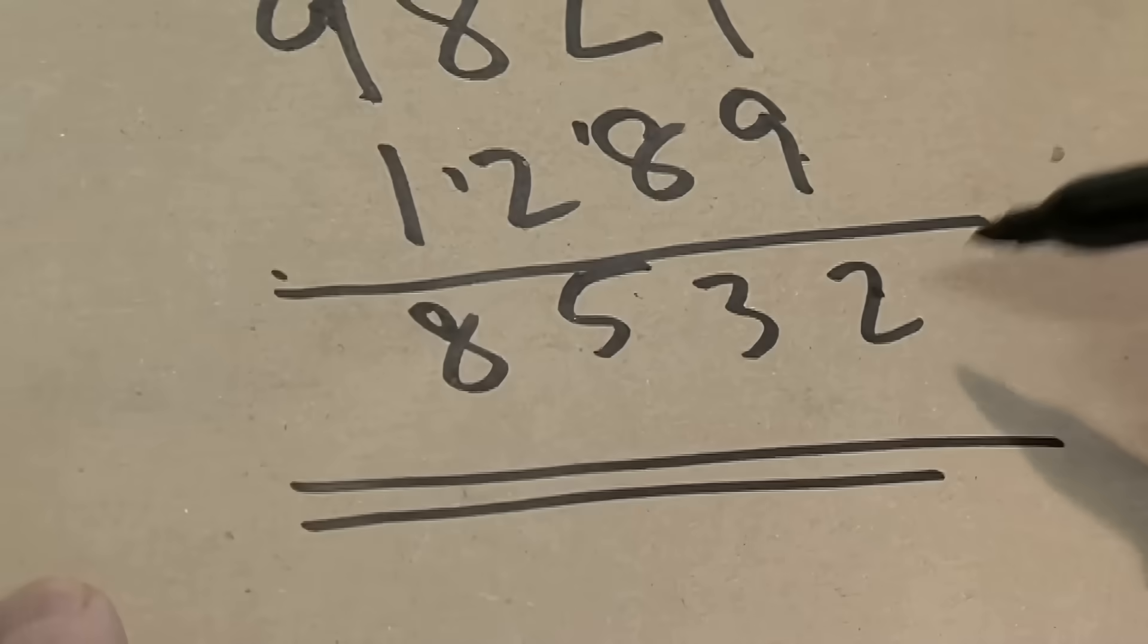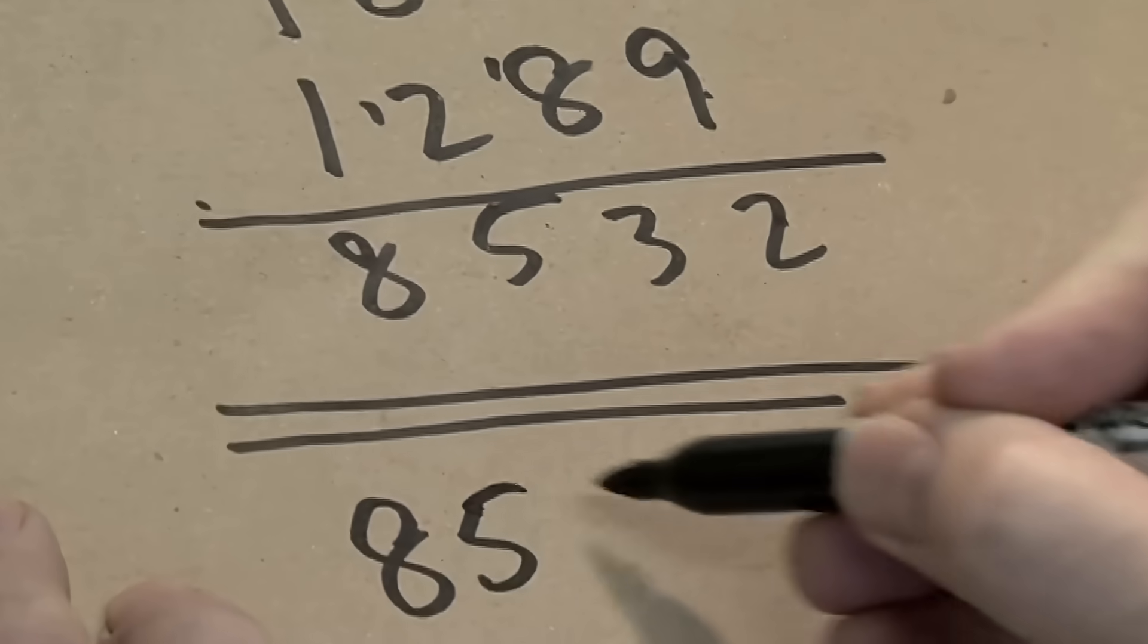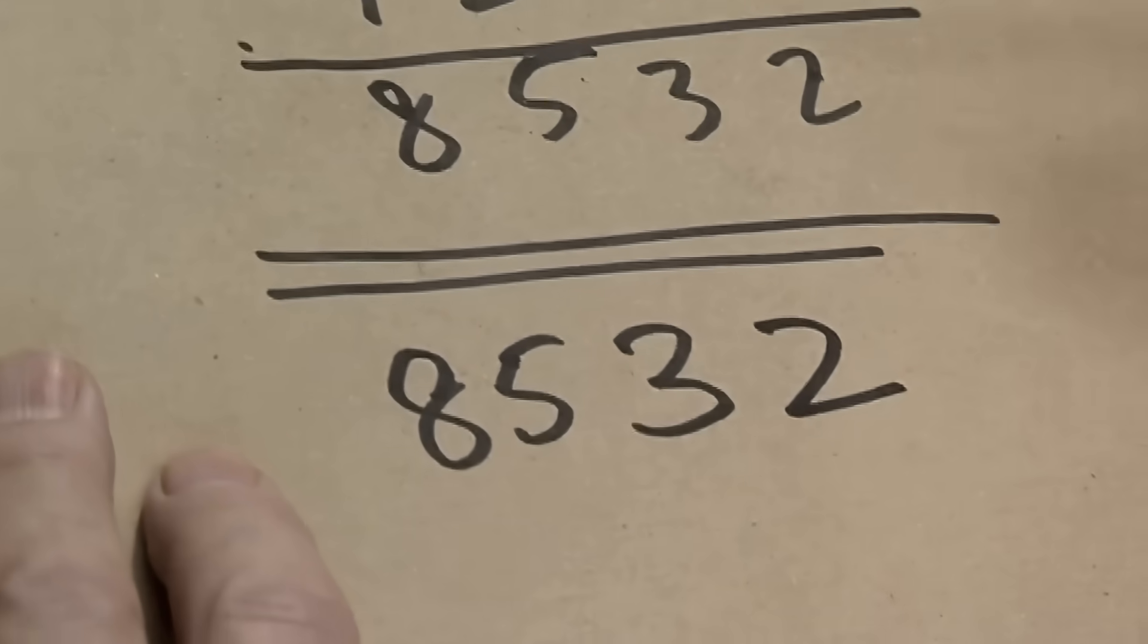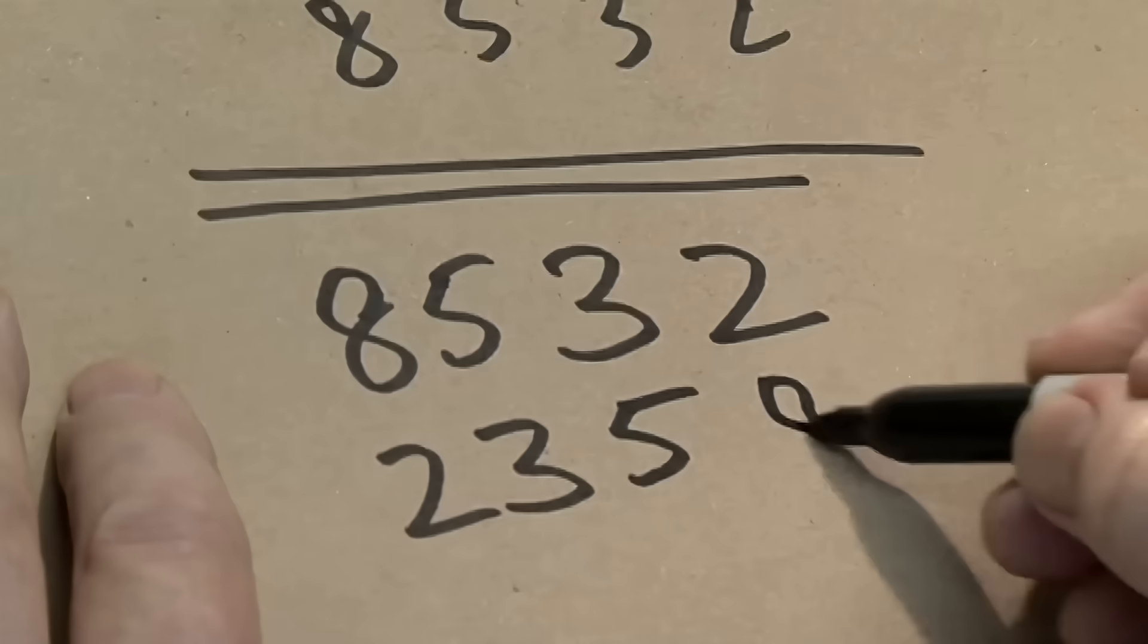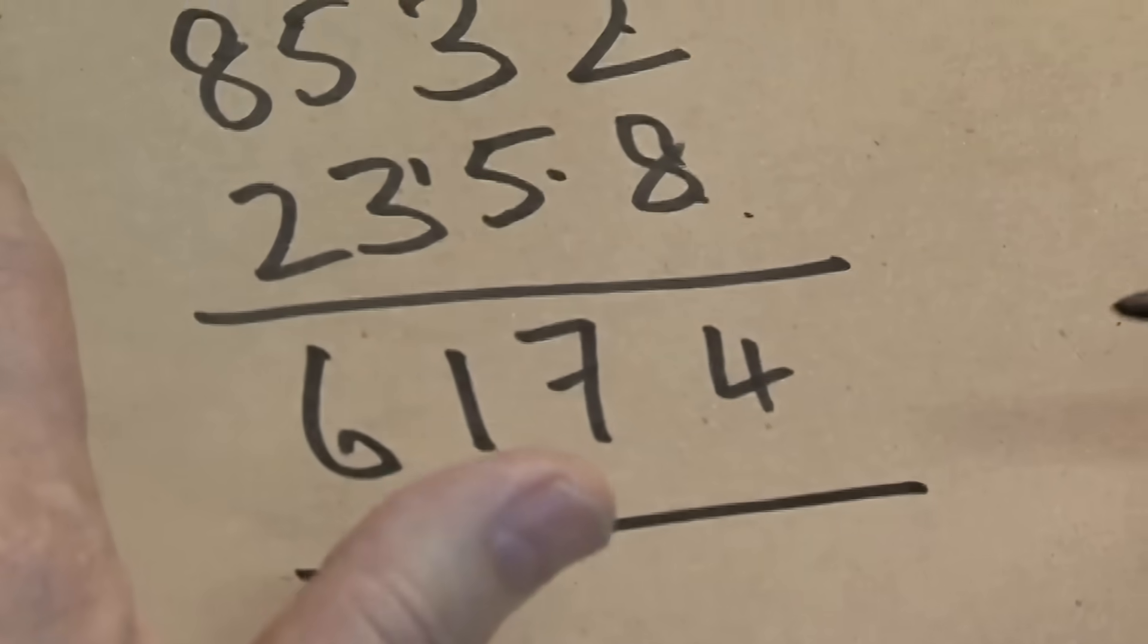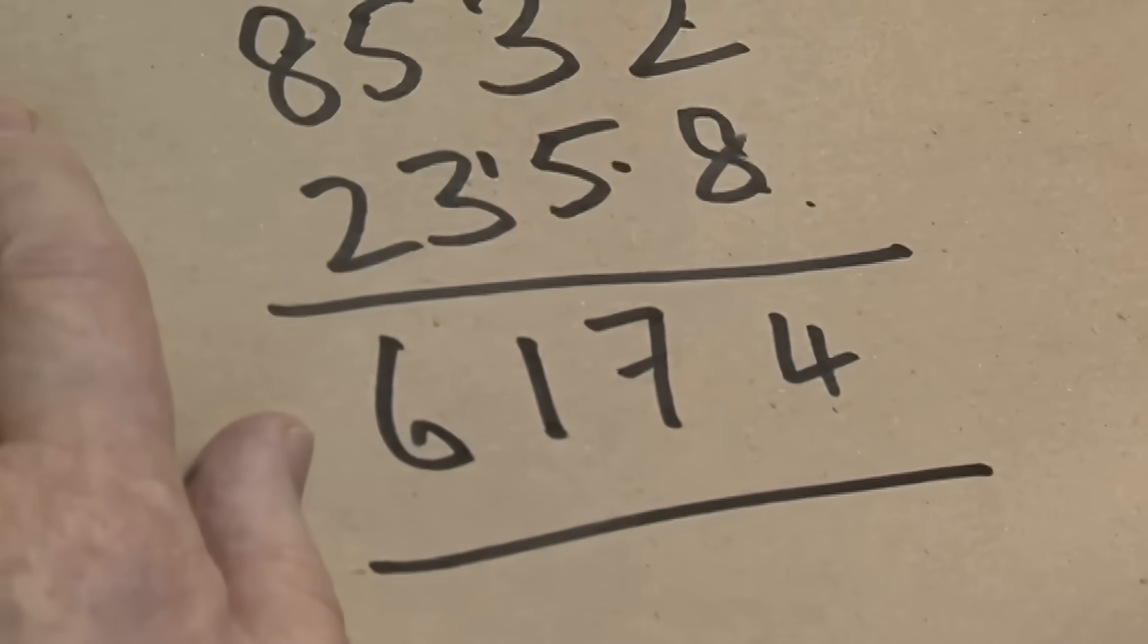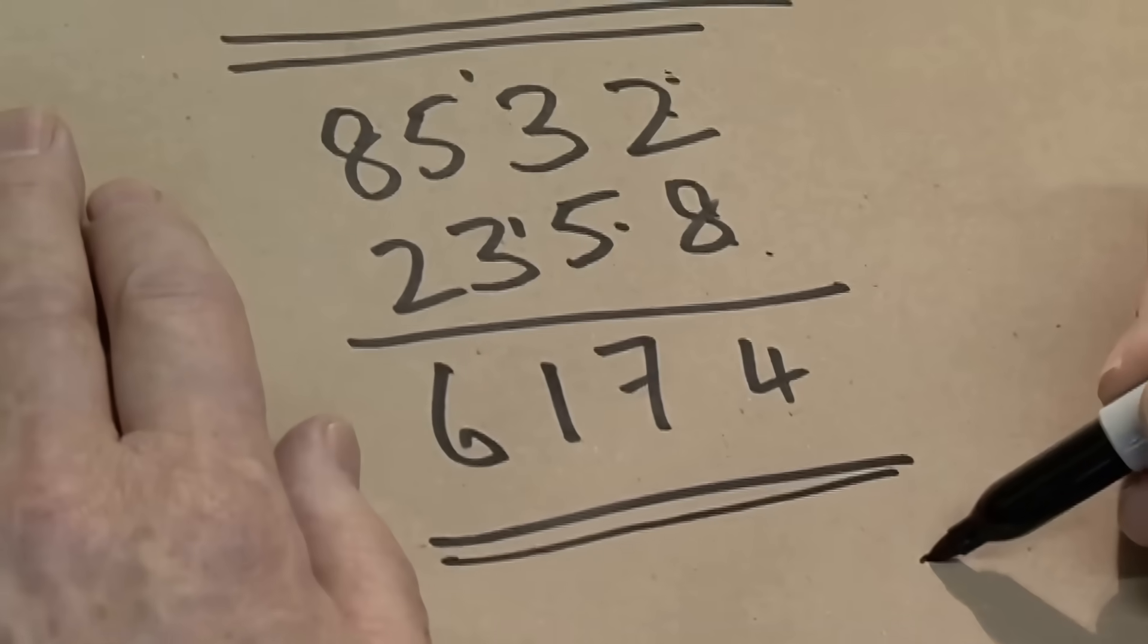Now this is the new number that you put into this machine. You arrange that in order with the highest to lowest, which it turns out to be right straight away, and then the other way round: 2, 3, 5, 8. And you take one away from the other and there we are, 6174. So I've only had to go through this iteration twice and I get to the number.